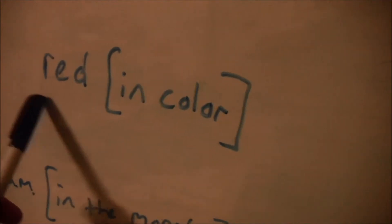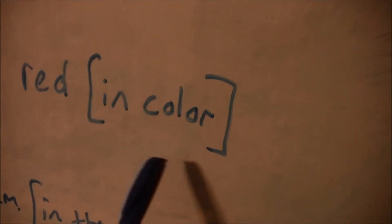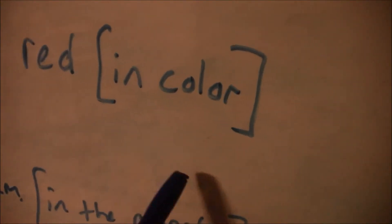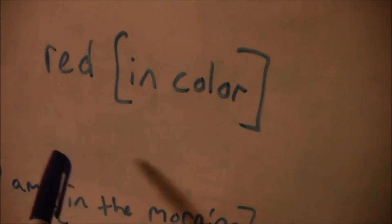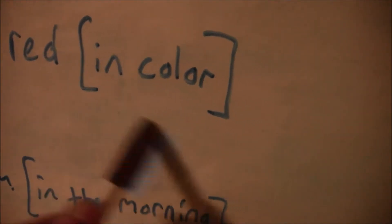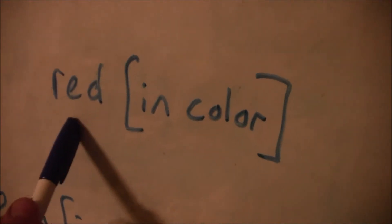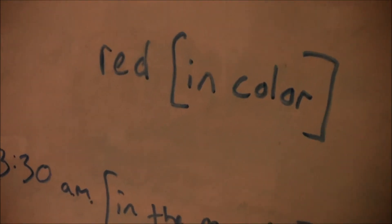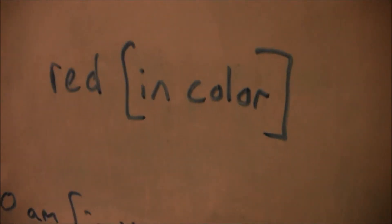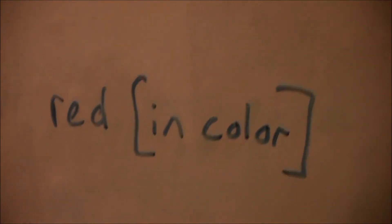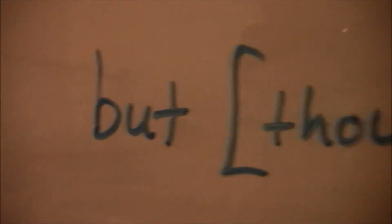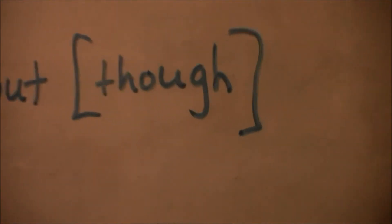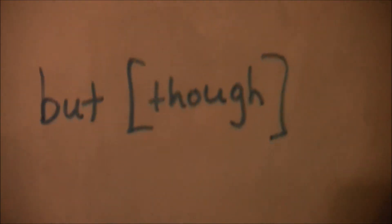Next example: red in color. You don't need to say in color. All you need to say is red. That book is red. You don't need to say that book is red in color. Next example: but though. Just use one of them, not both.